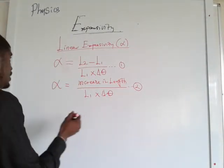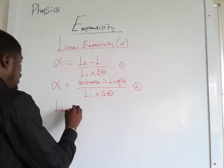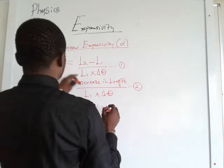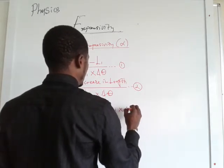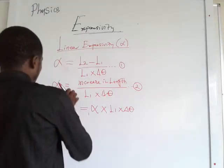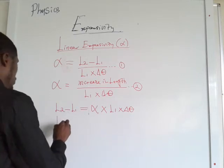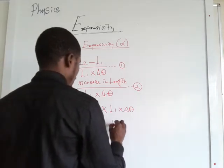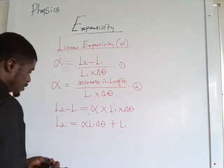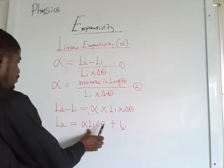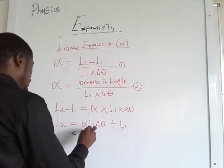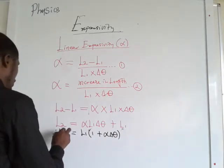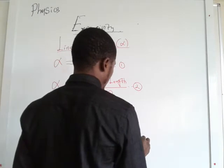From equation number 1, we can write that L2 minus L1 equals alpha times L1 times change in temperature. If you make L2 the subject of the formula, then you have L2 equals alpha times L1 times change in temperature plus L1. Observing that L1 is common, we factor it out, giving L2 equals L1 times (1 plus alpha times change in theta). This is equation number 3.